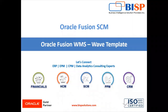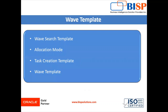Hello friends, welcome to BHP Solution. My name is Lokesh Khandi. In today's session we are going to create a wave template in Oracle Fusion WMS Cloud. Before creating a wave template we have to configure some basic setup like wave search template, allocation mode, and task creation template. With the help of these three components we can create the wave template. Let's move to the instance and see each configuration one by one, starting from the wave search template.